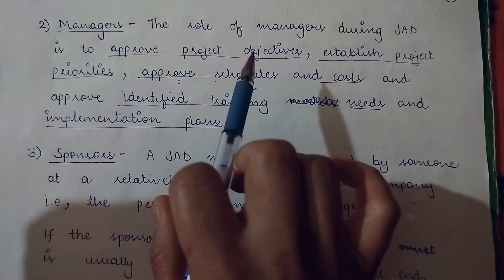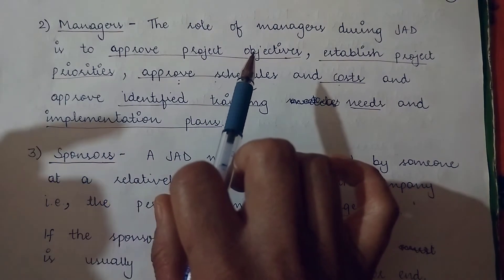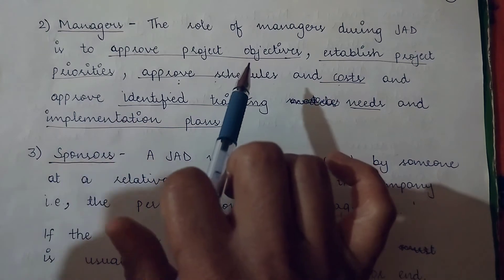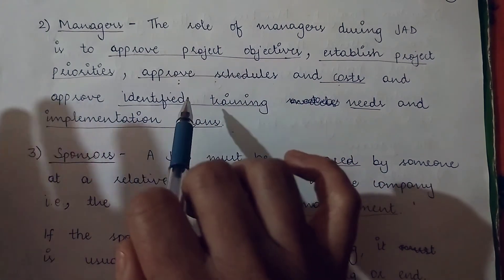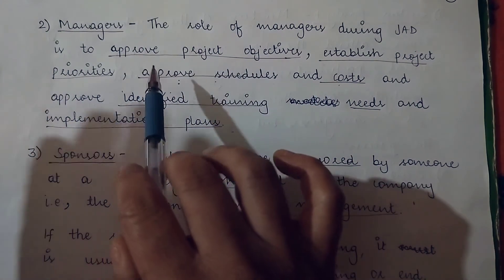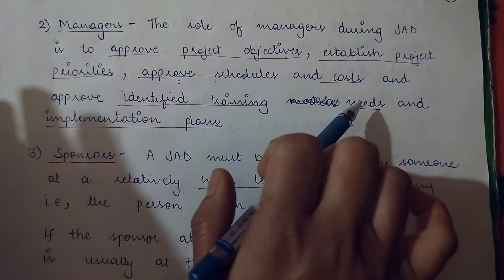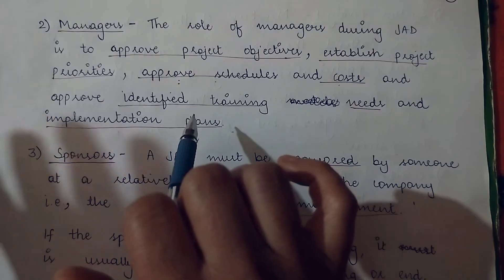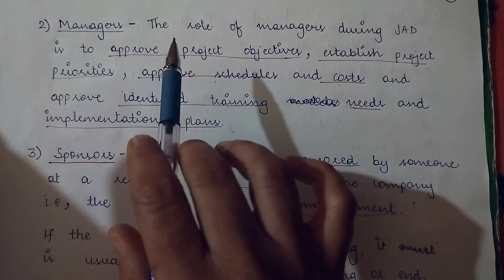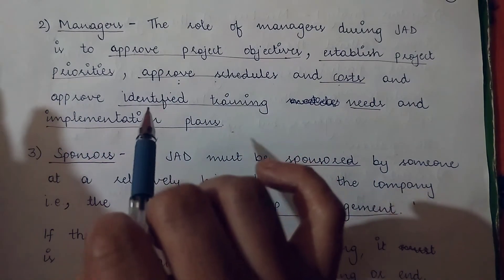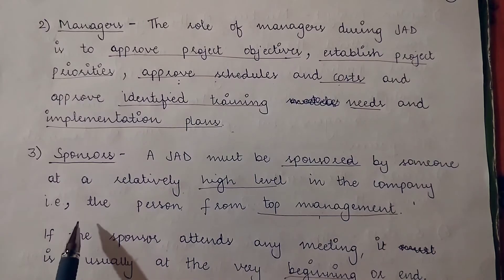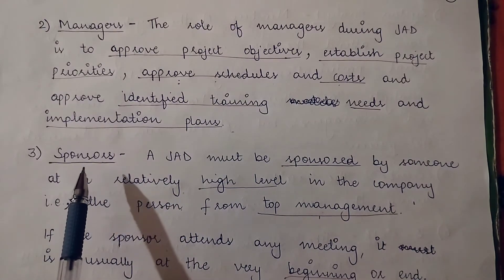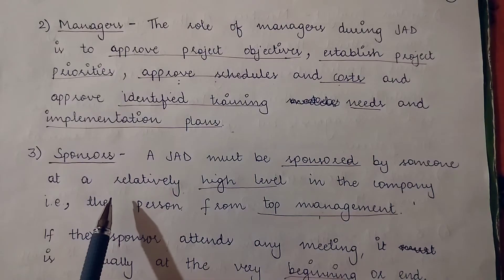When a new system is proposed, users need to be trained to use it. The managers would identify the training needs of the users who will be using the new system, and they also decide the implementation plans for the final implementation of the project.